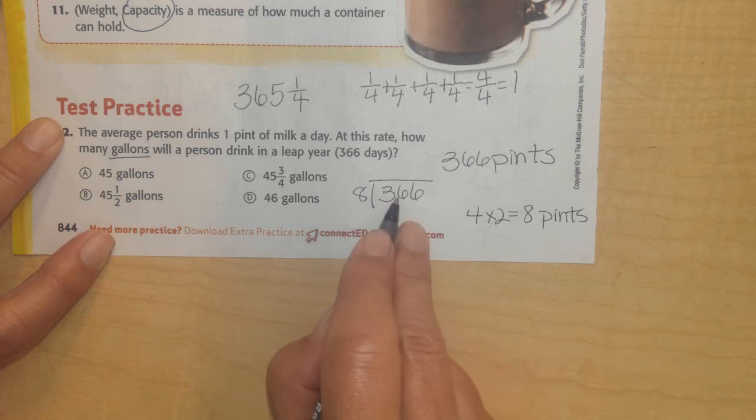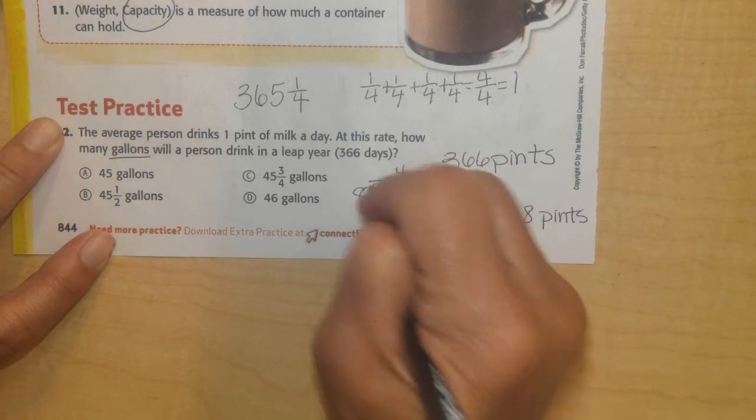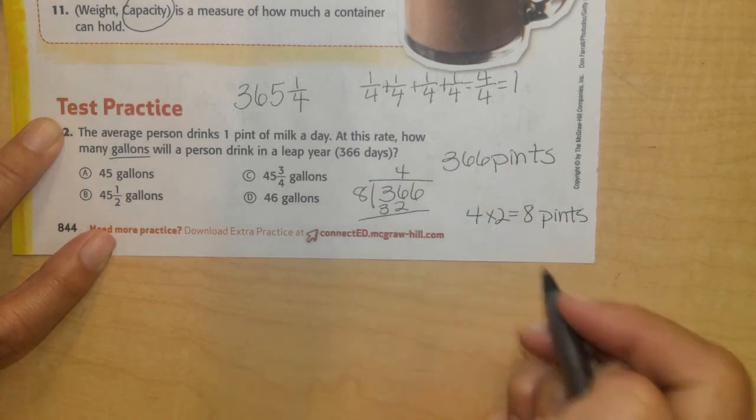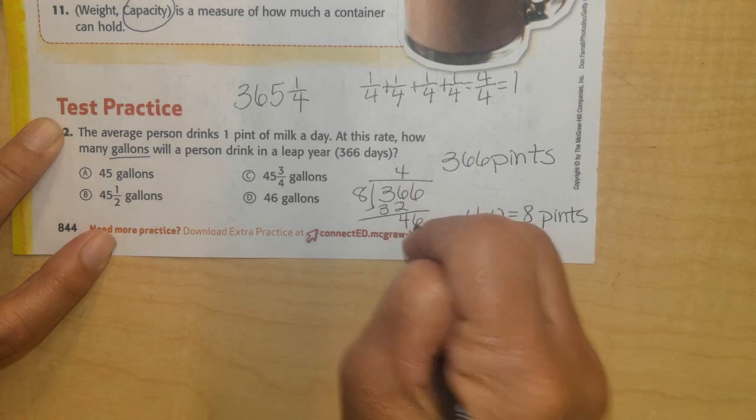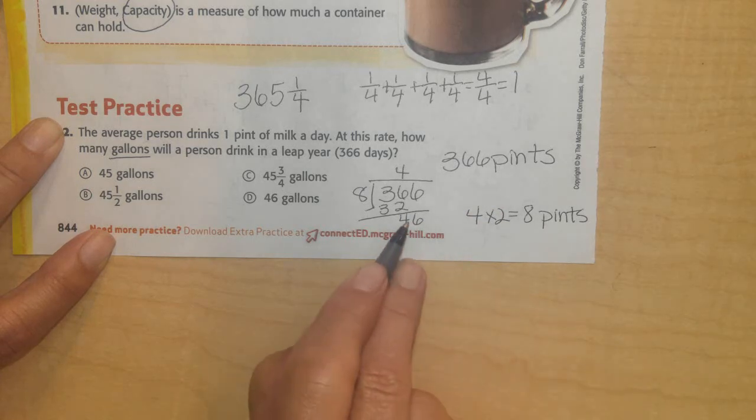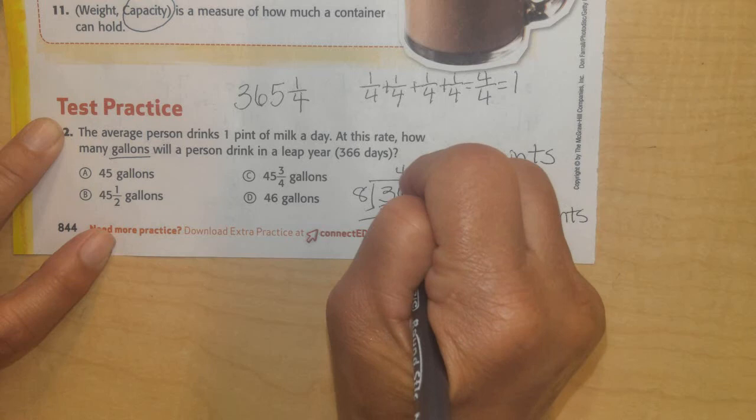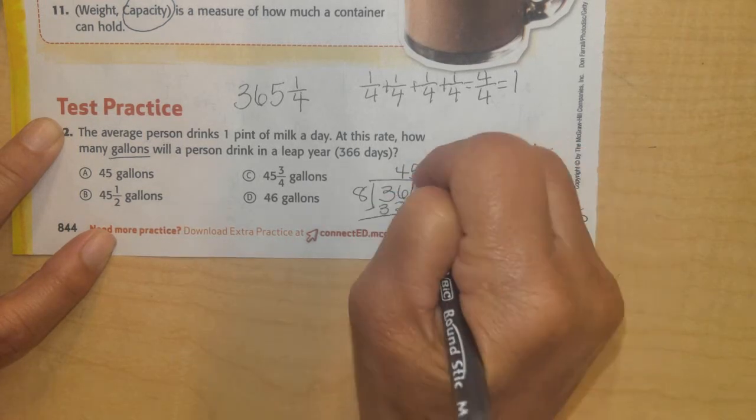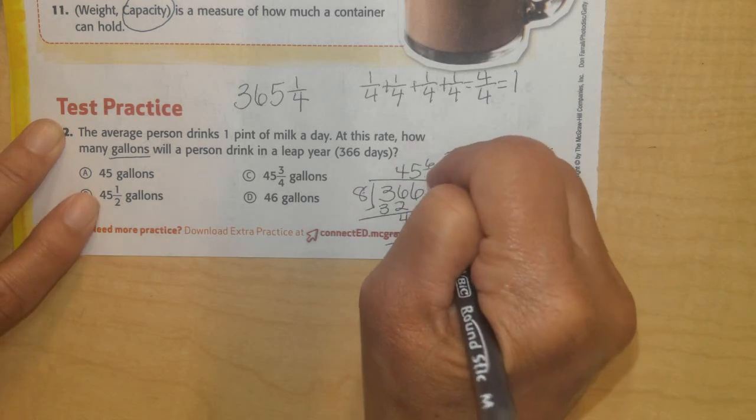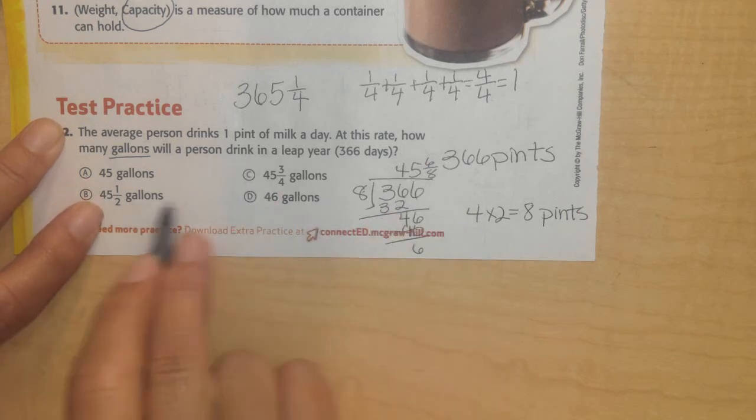So eight times four. Eight times five would be 40. That's too much. Eight times four is 32. I'll subtract. Six take away two is four. I'll bring down my six. So right now I have 46. I know eight times five is 40. Eight times six is 48. That's too big. So I'm going to take eight times five is 40. I'll subtract. I'll have six. I'll have six out of eight since they're doing fractions. I have 45 and six out of eight. Which one of these is equal? I have 45, 45. I know it's either B or C.